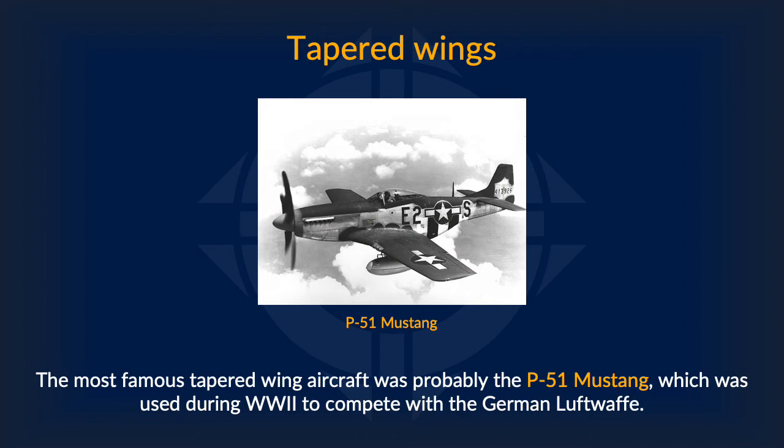Tapered wings were famously used for the P-51 Mustang in World War II, which was used and produced by the Allies to compete with the German Luftwaffe.